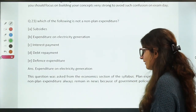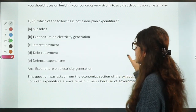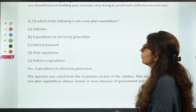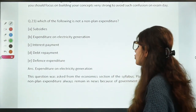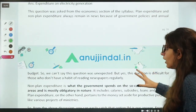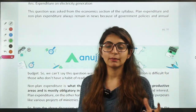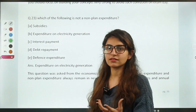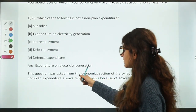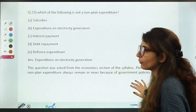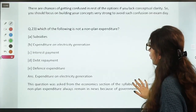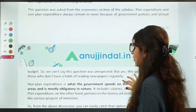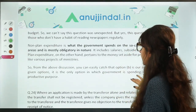Which of the following is not a non-planned expenditure? This falls under economics as well as finance current affairs. Planned expenditure is productive, while non-planned expenditure includes things like government salaries or interest payments — not directly productive. The correct answer is 'expenditure on electricity generation' — this is actually a non-planned expenditure. This is a general economics question covered through newspapers. The concept of planned and non-planned expenditure has been covered in the course.